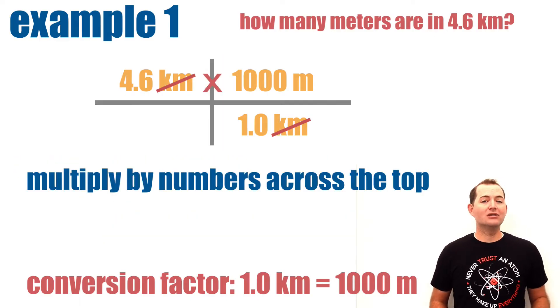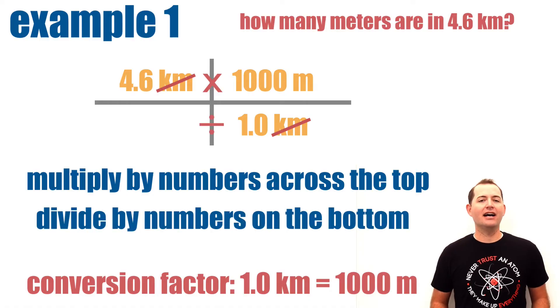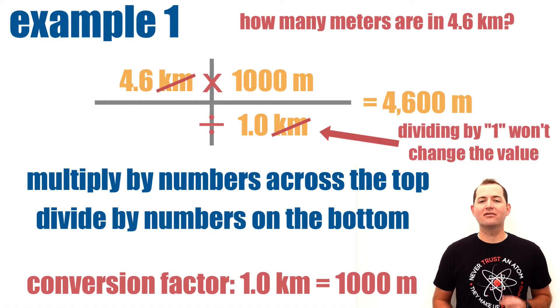The next step is to multiply the numbers across the top and divide by each number on the bottom. We know that multiplying or dividing by 1 will not change our value.